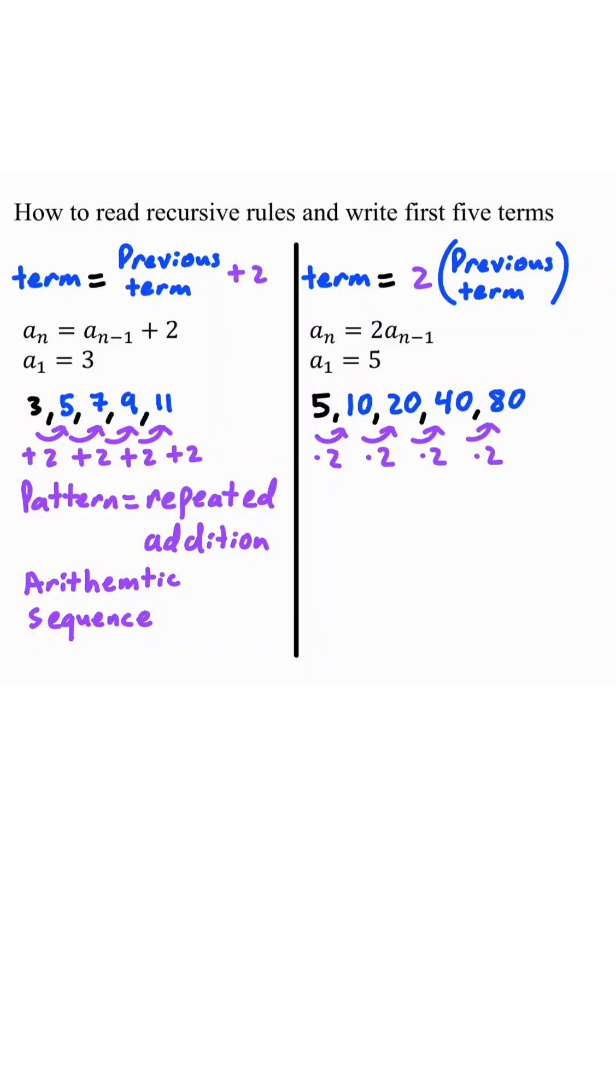Here is the first five terms. This pattern is repeated multiplication, which would be known as a geometric sequence.